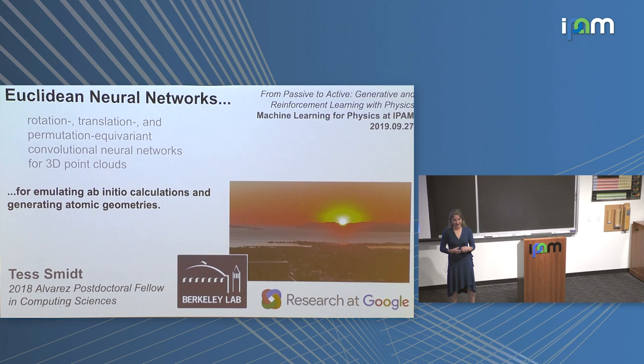Today I'm going to talk about neural networks that have Euclidean symmetry built into them. By Euclidean symmetry, I'm specifically meaning Euclidean symmetry in 3D. So these are networks that can very naturally operate on geometry.